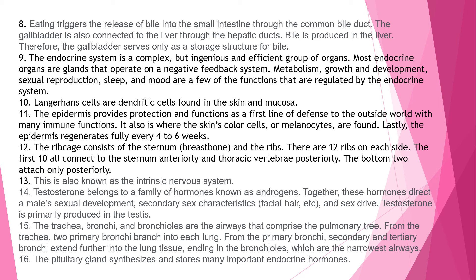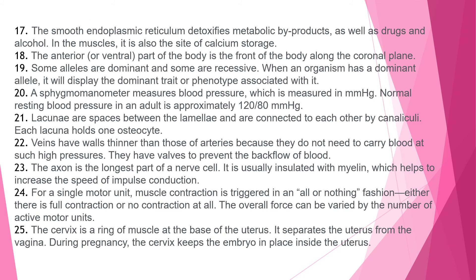Explanation 13: The enteric nervous system is also known as the intrinsic nervous system. Explanation 14: Testosterone belongs to a family of hormones known as androgens, which direct male sexual development, secondary sex characteristics like facial hair, and sex drive. Testosterone is primarily produced in the testes. Explanation 15: From the trachea, primary bronchi branch into each lung; secondary and tertiary bronchi extend further into the lung tissue, ending in the bronchioles, which are the narrowest airways.